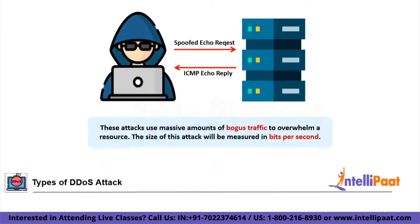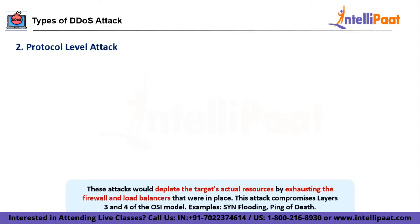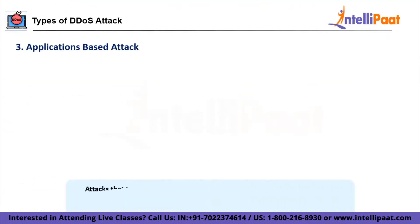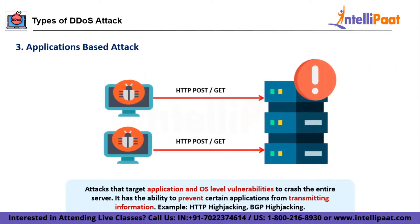Next we have protocol-level attacks. These attacks are meant to consume essential resources of the target server. They exhaust the load balancers and firewalls which are meant to protect the server against DDoS attacks. These protocol attacks include SYN floods and Smurf DDoS, among others. The size of these attacks is measured in packets per second. Finally, we have application-based attacks. Application layer attacks are conducted by flooding applications with malicious, corrupted requests, measured in requests per second. These sophisticated attacks target application and operating system level vulnerabilities, preventing the application from delivering necessary information and hogging network bandwidth up to the point of system crash.